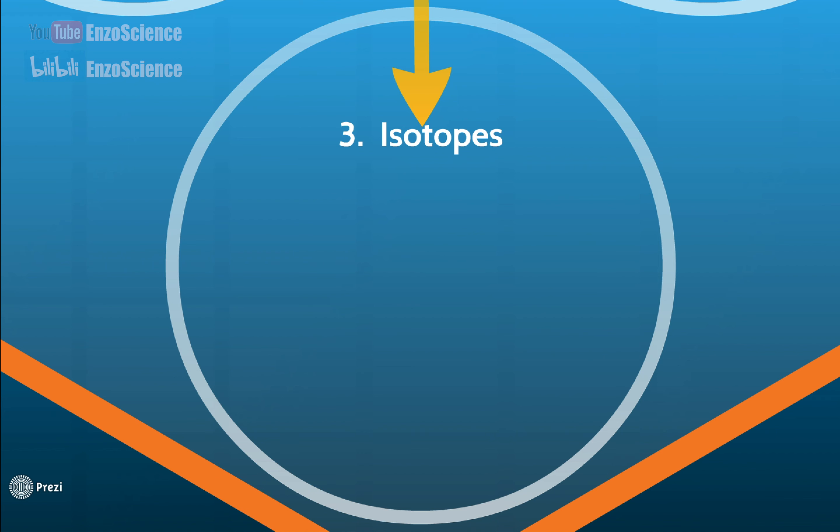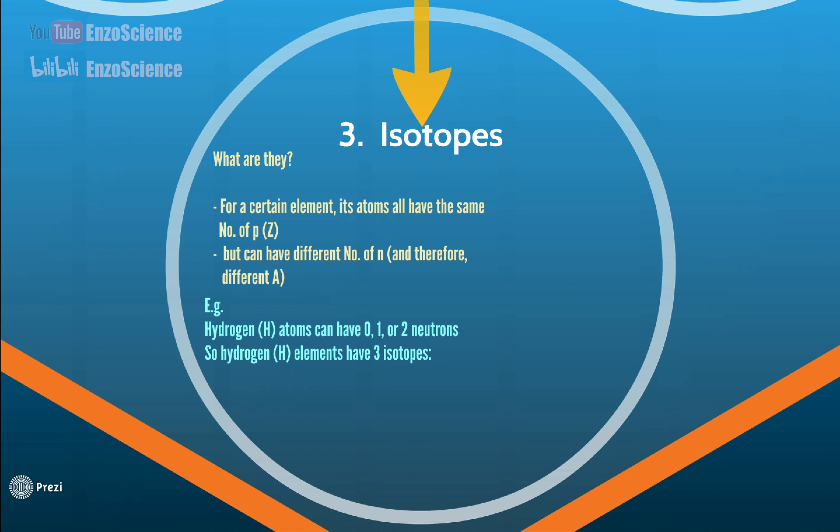Now let's move to the third topic, isotopes. What are isotopes? For a certain element, its atoms all have the same number of protons, but can have different number of neutrons, and therefore different mass number capital A. For example, there are three isotopes for hydrogen atoms, and they each contain 0, 1, and 2 neutrons respectively.